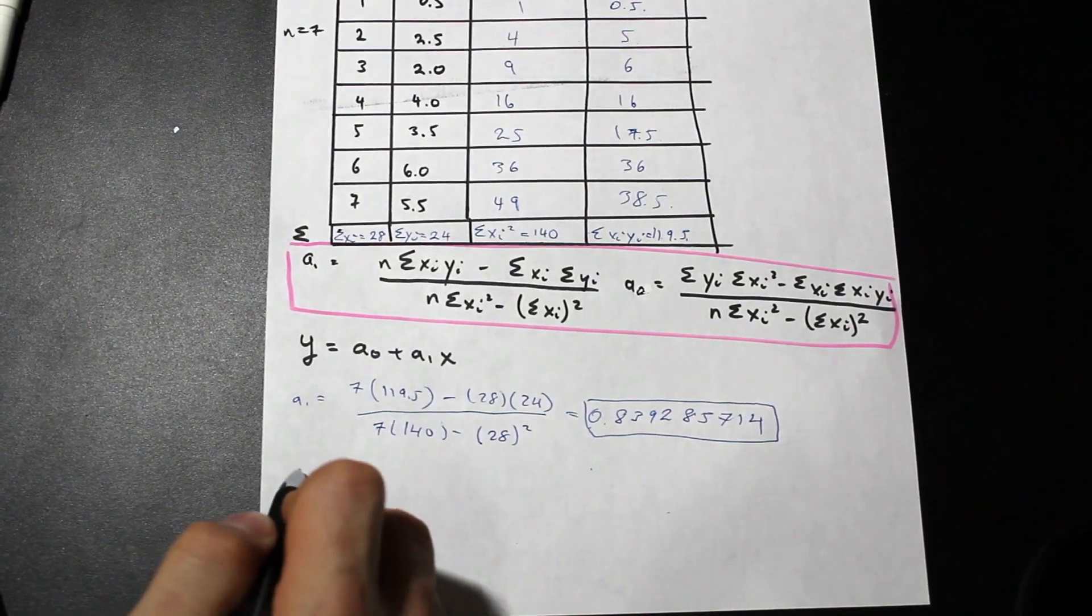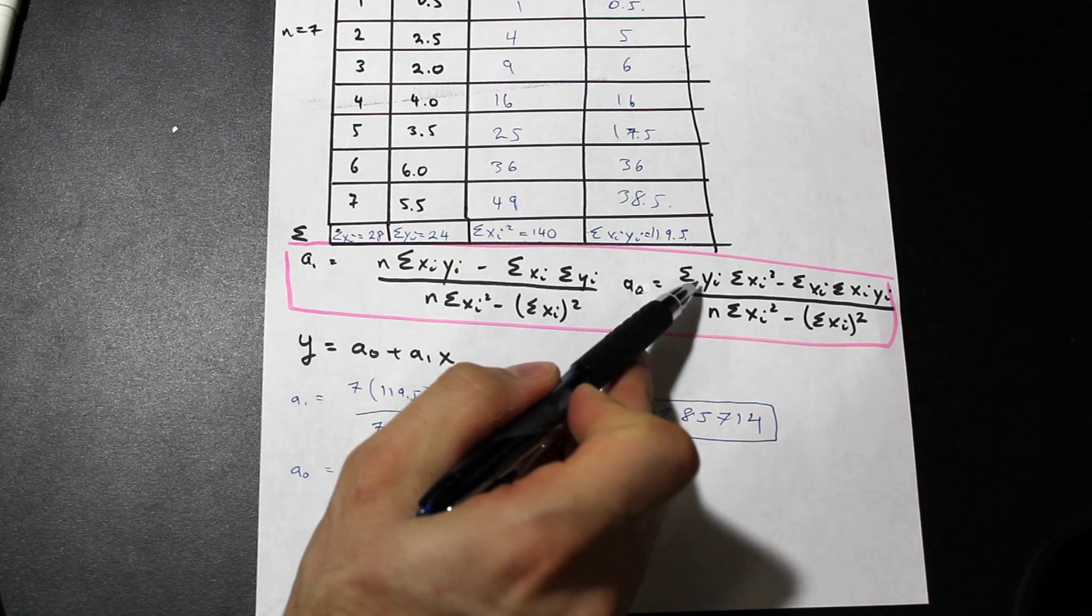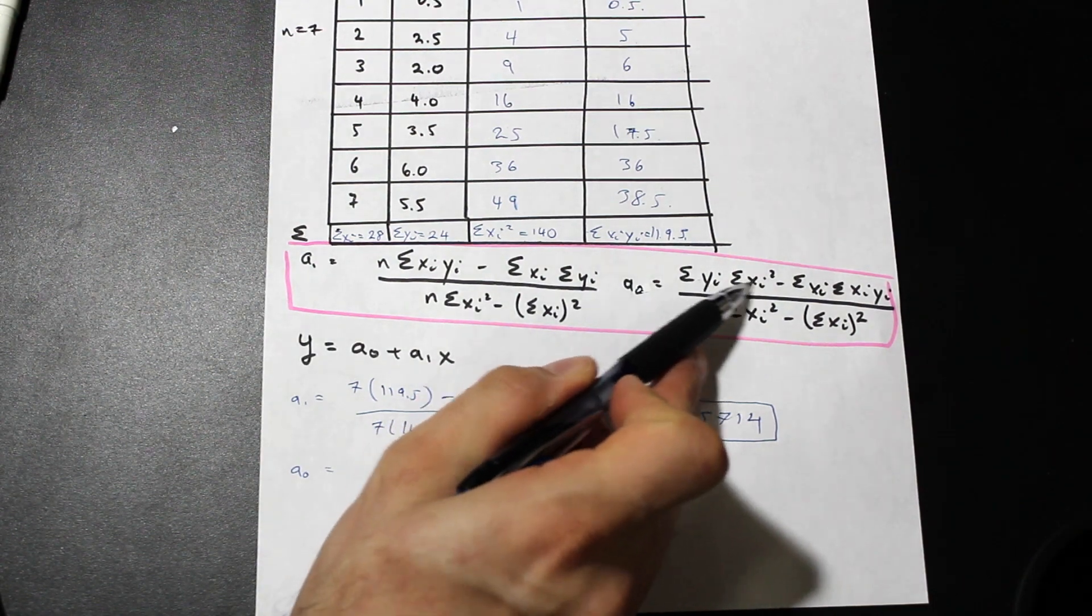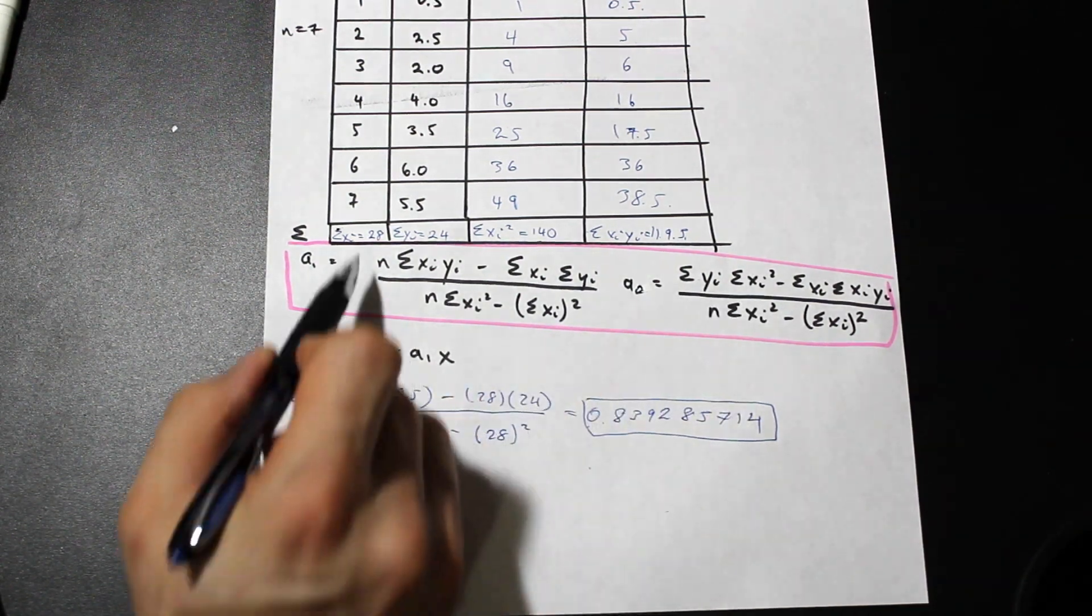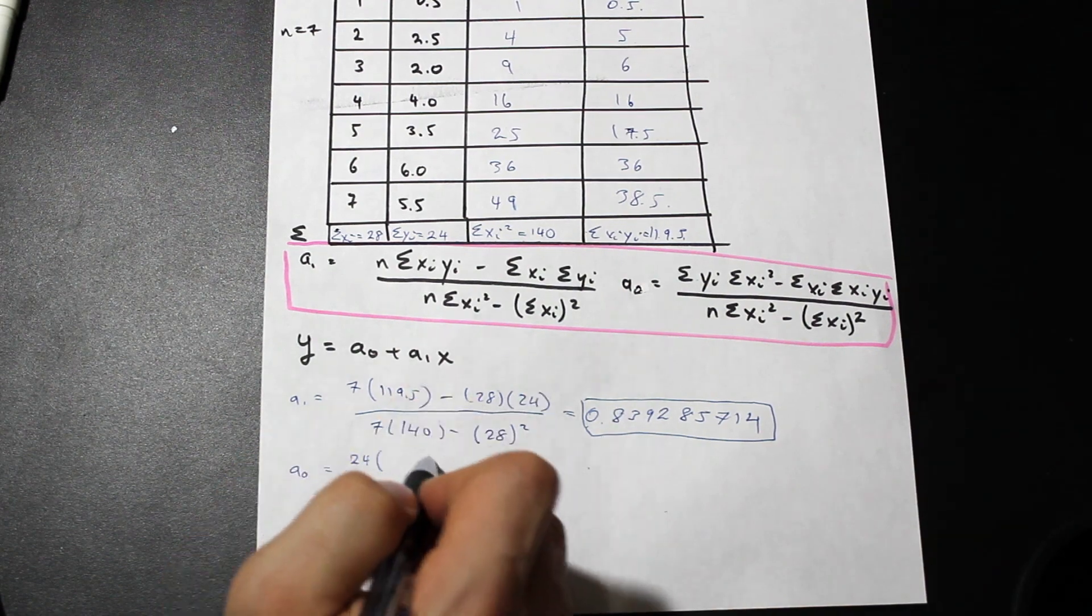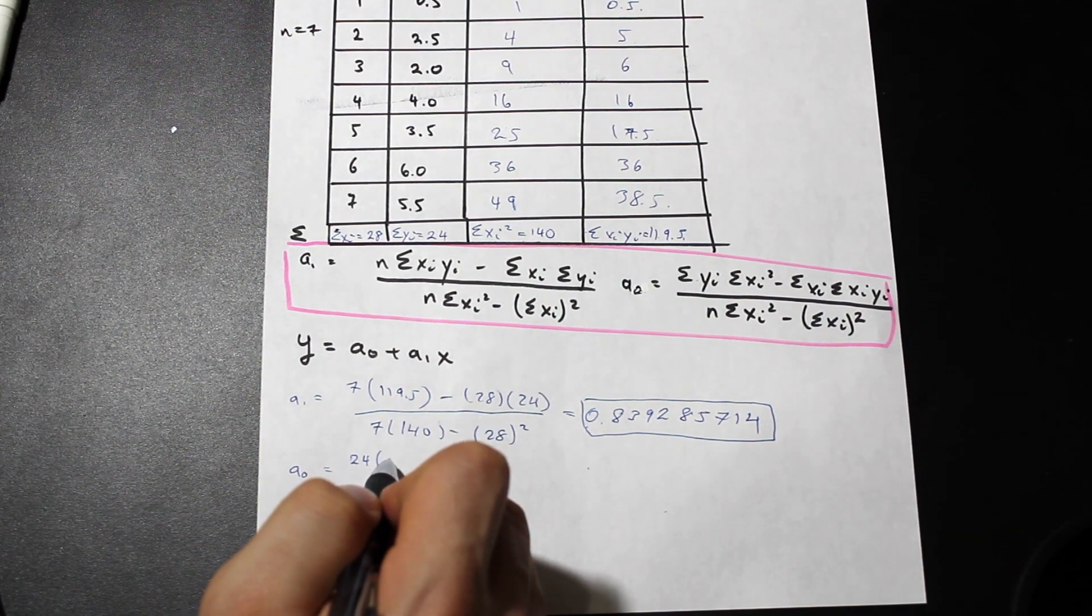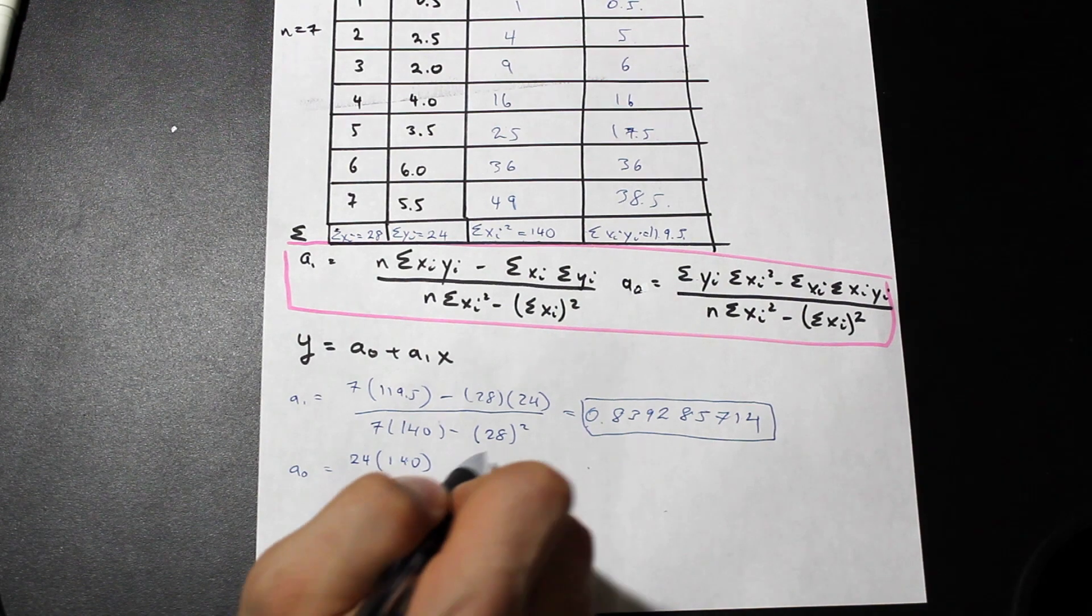we're going to go ahead and look for a naught. Let's just follow the formula. We have a summation of yi times summation of xi squared. So that's going to be 24 times the summation of yi squared, so we have 140.